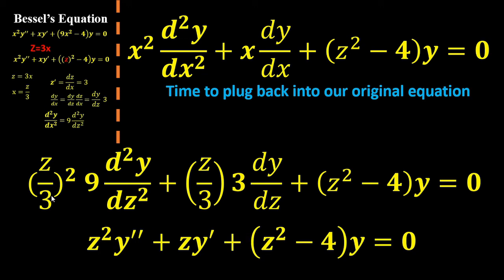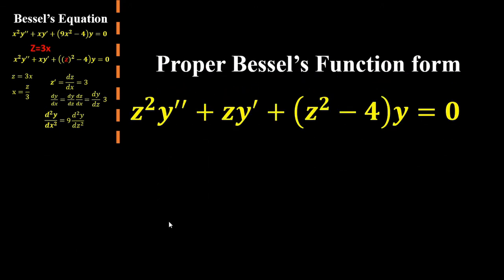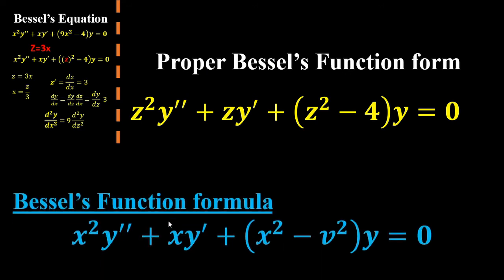After we clean it up a little bit, we can see that we arrive to a differential equation that a lot closely resembles our actual formula that we're trying to compare it to. Therefore, we finally arrive to a proper Bessel form equation. Every single term resembles the equation nice and closely. Very good. Now we finally can utilize the solutions that Bessel worked out.